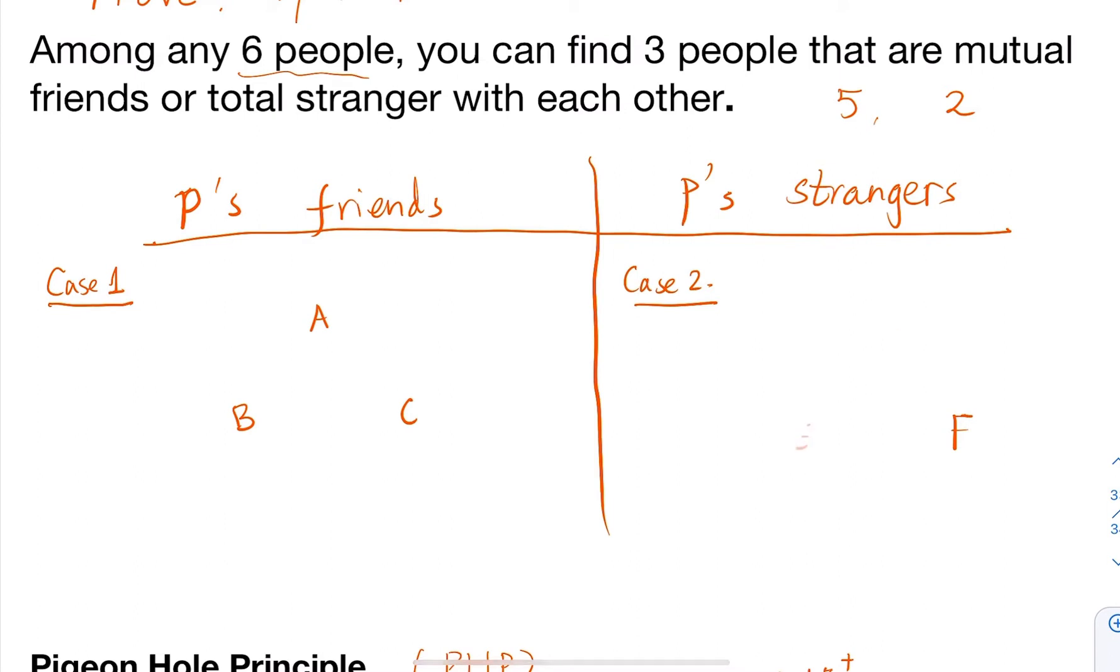That makes sense - you have five people. In considering whether they're friends with P, let's give P a real name. Let's assume this person is called Tom.